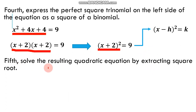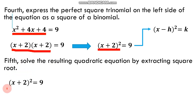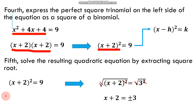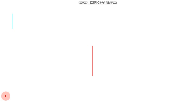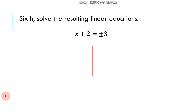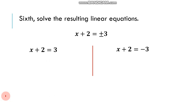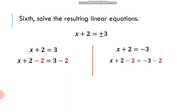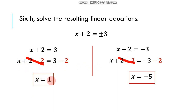The fifth step is to solve the resulting equation by extracting the square root. From the square of binomial, we extract the square root, canceling the square and the radical sign, giving us x plus 2 equals positive or negative 3. We now solve the two resulting linear equations: x plus 2 equals 3 and x plus 2 equals negative 3. Using additive inverse, x equals 1 and x equals negative 5.